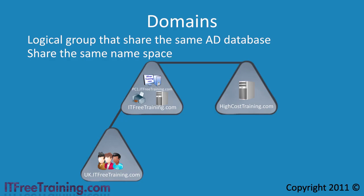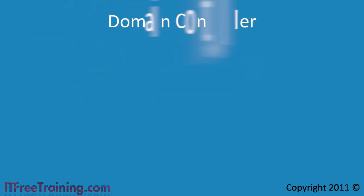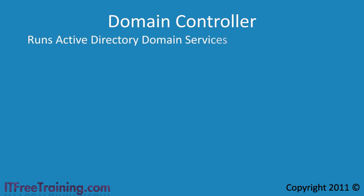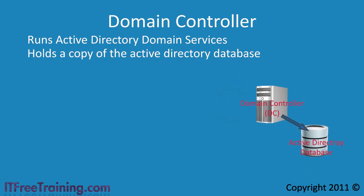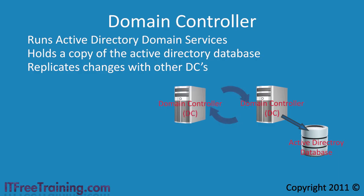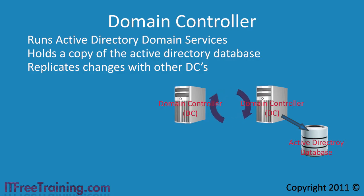Now that we know what Active Directory is and what a domain is, next we need to talk about the next big player in a domain: the Domain Controller. A Domain Controller, put in its simplest terms, runs Active Directory Domain Services. As soon as this role is added to a Windows Server, it becomes a Domain Controller. To put it another way, a Domain Controller holds a copy of the Active Directory database. A Domain Controller, or DC, will replicate any changes made to its local copy of the Active Directory database to other Domain Controllers. This is how Active Directory keeps its database up to date when there are copies of the same database all around the world — each Domain Controller replicates its changes through the network to the others, and those Domain Controllers replicate their changes back.